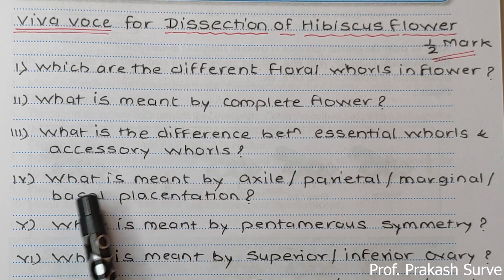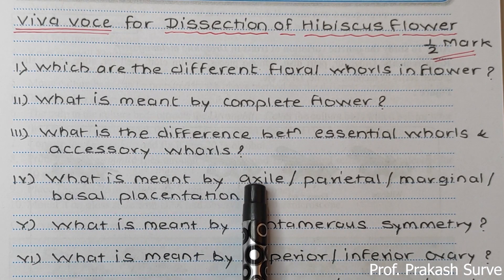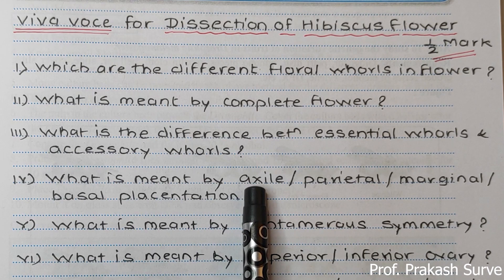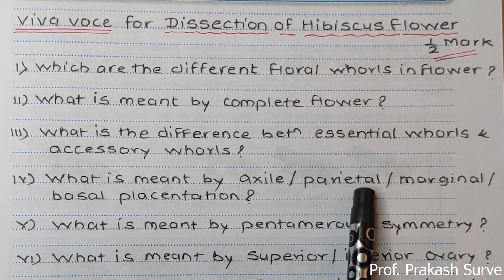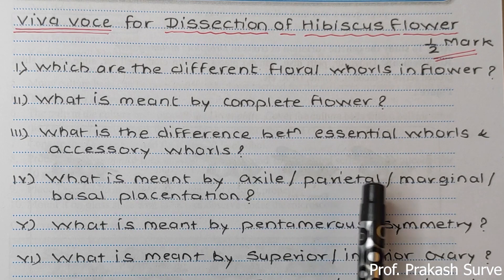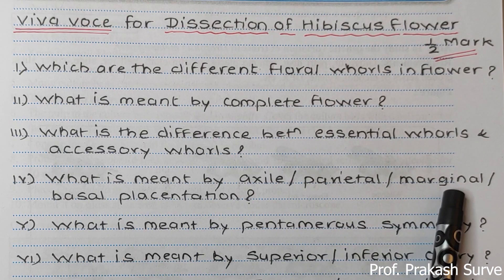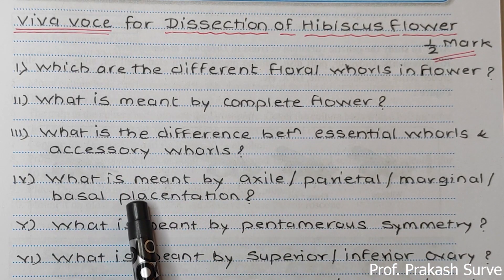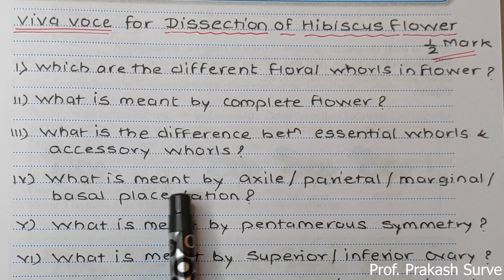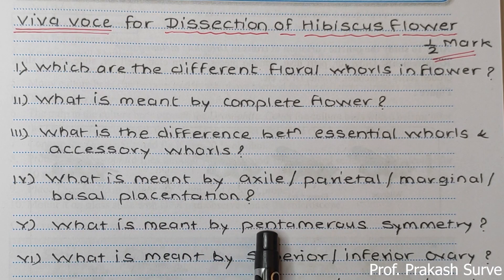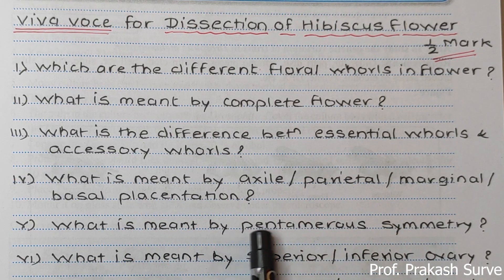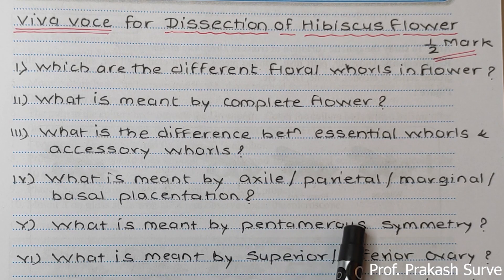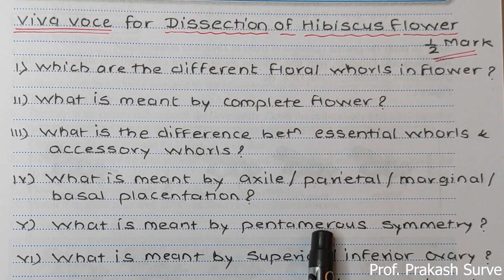What is axile placentation? When all ovules are attached to the axis, it is called axile placentation. Parietal placentation is when ovules attach to the periphery; marginal placentation when they attach to the margin; basal placentation when the ovule attaches to the base. What is pentamerous symmetry? Penta means five — sepals, petals, and carpels are five in number, as observed in hibiscus.